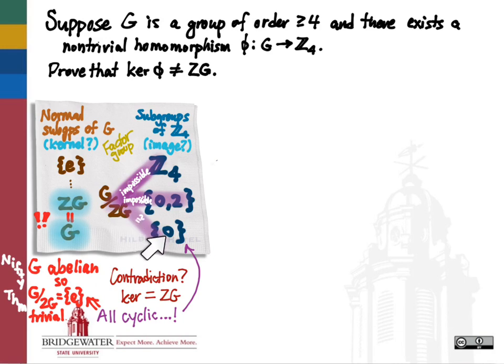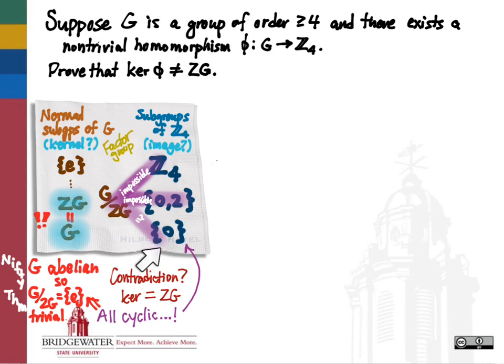Therefore, the homomorphism is sending all elements of g to the identity. What we've shown is that if the kernel of the homomorphism equals the center of the group, then the image of the homomorphism is trivial, and therefore the homomorphism itself is trivial. That negates the assumption that we have a non-trivial homomorphism, giving us our indirect proof.